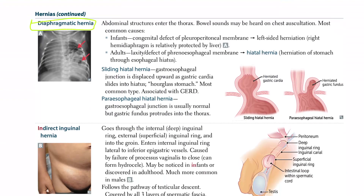Diaphragmatic hernias are high yield. Abdominal structures enter the thorax, so bowel sounds are heard on chest auscultation. The most common cause differs by age: in infants it is a congenital defect of the pleuroperitoneal membrane, leading to left-sided herniation because the right hemidiaphragm is relatively protected by the liver. In adults, you're looking at a defect of the phrenoesophageal membrane.